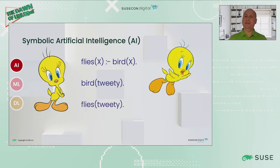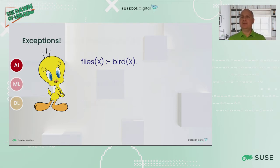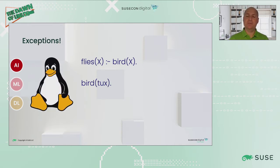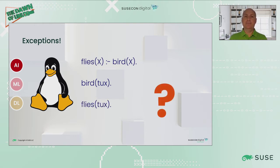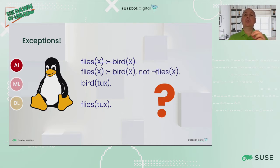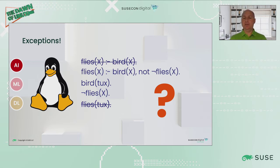The devil is in the detail, though, and as always in life, there are exceptions. Imagine we aren't facing Tweety the bird, but Tux the bird. Tux happens to be a penguin, and penguins are birds. Tux also happens to be the mascot of Linux. But neither that mascot, nor Tux, nor penguins in general do fly. Still, in this example, we would derive that they do.